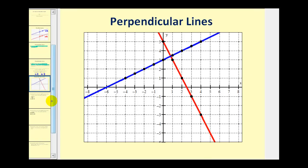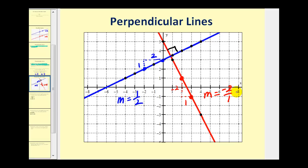Here's an illustration of two perpendicular lines. They intersect and form a right angle, which is equal to 90 degrees. We can see that the slope of the blue line would be equal to one-half using these two points. And using these two points, we can determine the slope of the red line would be down two, right one, which would be negative two over one. So we can see they're negative reciprocals, which of course does equal negative one when multiplied.